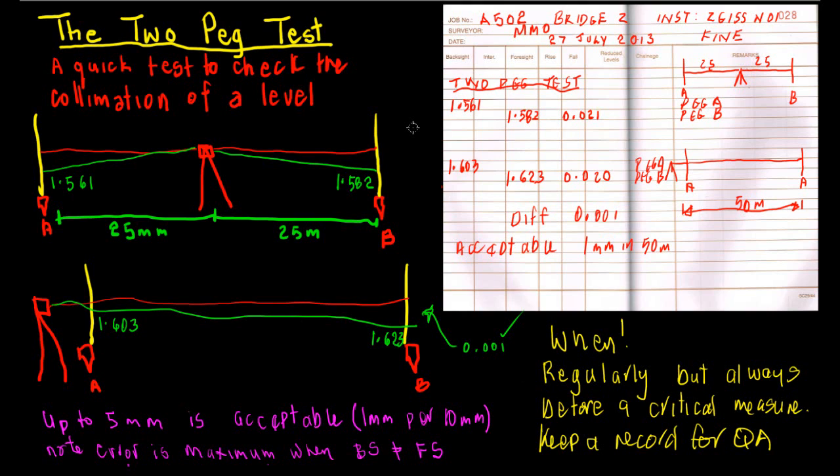These are the same sort of names, but basically your standard level that you're using with a leveling staff, probably in a construction situation or surveying situation. This is a test of the collimation that the level is actually reading a level or horizontal line.